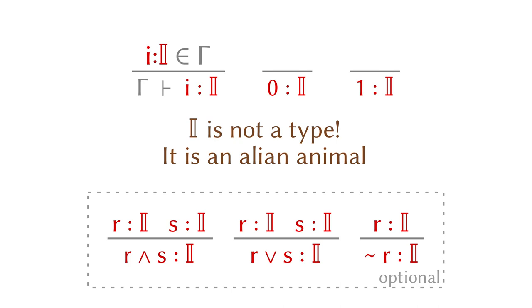Depending on the kind of cubical type theory you are talking about, they might put a different kind of algebra on the interval. For example, given two points in the standard interval, you can construct the meet of these two points to give you another point, or the join of it, or the reversal. However, in today's lecture I'm not going to discuss them. Later on, when they matter, we will discuss the details of this algebra on the interval in more detail. But right now, you can just ignore it.